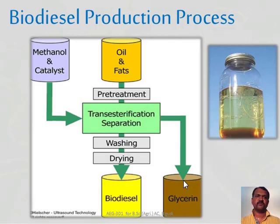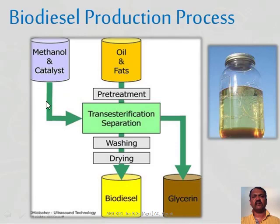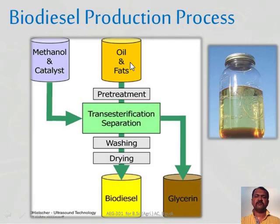The next production process is biodiesel. In the biodiesel production process, we will be having methanol and a catalyst. Methanol and catalyst are used for the biodiesel production process. From the other end we will be having plant-extracted oil, or fats, or waste oil from the households. That will be pre-treated and then added into the transesterification process.